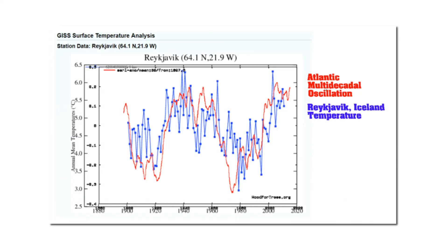So now let's look at what caused the prior warming. The red line in this graph shows the Atlantic Multi-Decadal Oscillation, and the blue line shows the unadjusted temperatures in Reykjavik. The Atlantic Multi-Decadal Oscillation is an ocean cycle which periodically causes warming and cooling in the North Atlantic. As you can see, there's nearly perfect correlation between the AMO and temperatures in Reykjavik, which are fairly typical for the Eastern Arctic. So there's no reason to blame recent warming in the Arctic on greenhouse gases — it's much better explained by the Atlantic Multi-Decadal Oscillation.